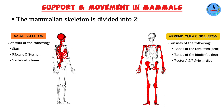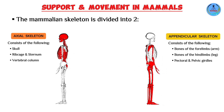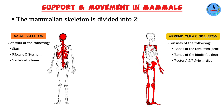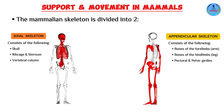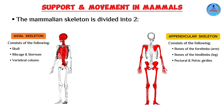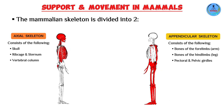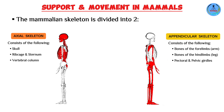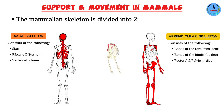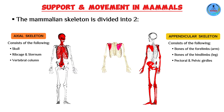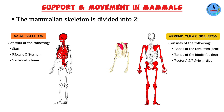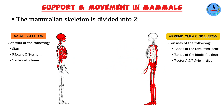The appendicular skeleton consists of the bones of the limbs — the forelimbs (also known as the arms) and the hind limbs (also known as the legs). It also consists of the girdles: the pelvic and the pectoral girdles. The girdles connect the bones of the arms and legs onto the axial skeleton. For example, the pectoral girdle connects the bones of the arms to the axial skeleton.